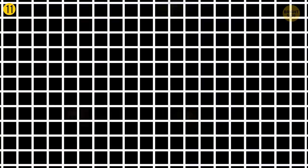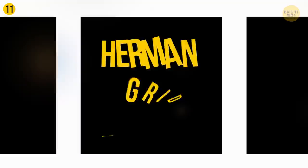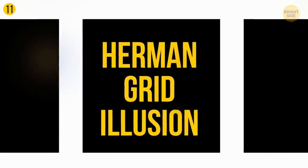Now, look at the black square crisscrossed with white perpendicular lines. The spots where the lines cross change their color from white to gray and back. When you focus on a particular spot, you see that it's white. But as soon as your attention wanders, the spot turns gray. This is called the Herman grid illusion.